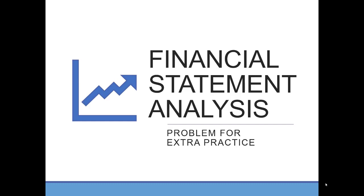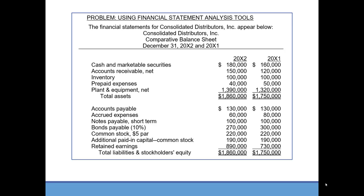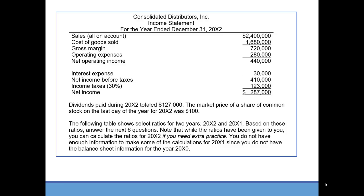In this problem we'll take a look at financial statement analysis tools and how they're used to evaluate various questions about the company's financial standing. We have a comparative balance sheet with 20x1 being the earliest year and 20x2 being the most recent year. We also have the income statement for the most recent year.